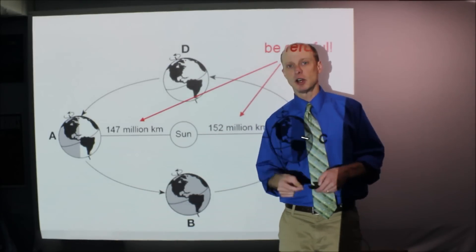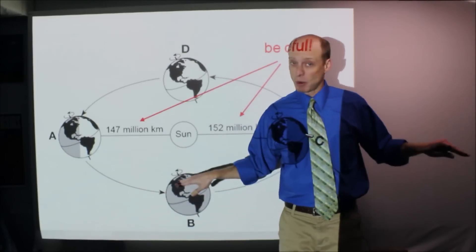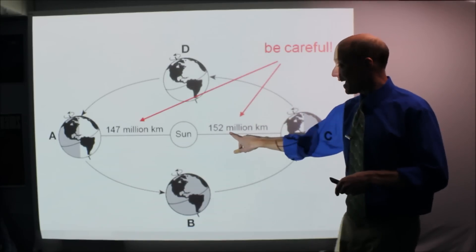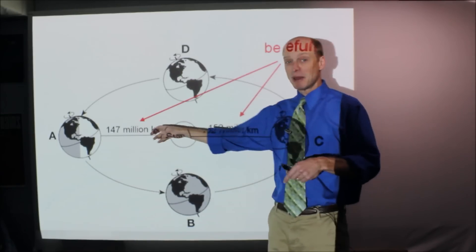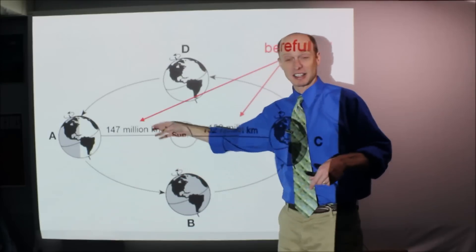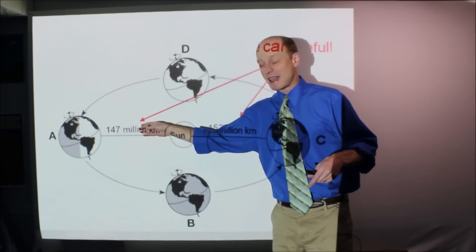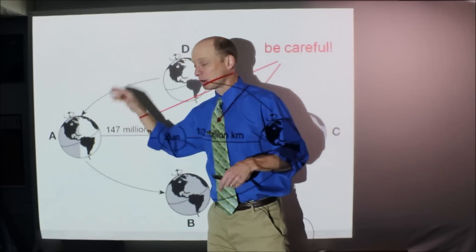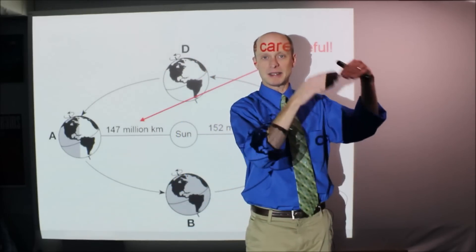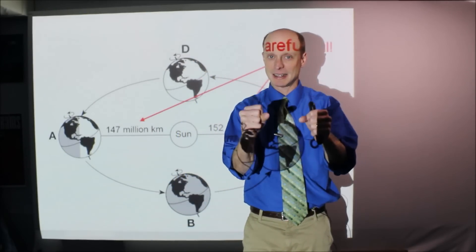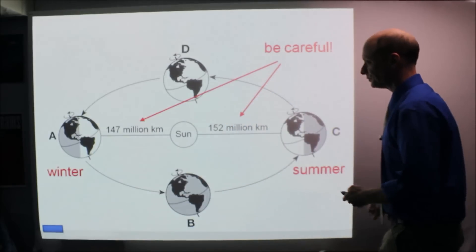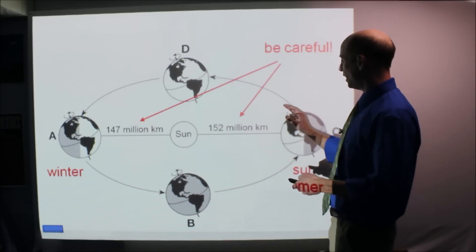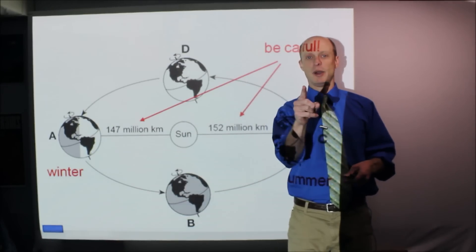Be careful — seasons are not about how close we are to the sun. Summer is not when we're closest to the sun. Look: axis tilted towards the sun is summer, and we are actually five million kilometers further away in summer. We're closer to the sun in winter, but it's all about the tilt because it's all about the angle of insolation. Summer and winter are based on the axis tilt — know it.